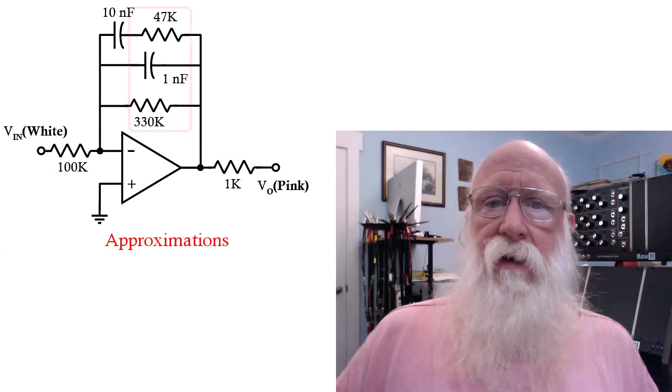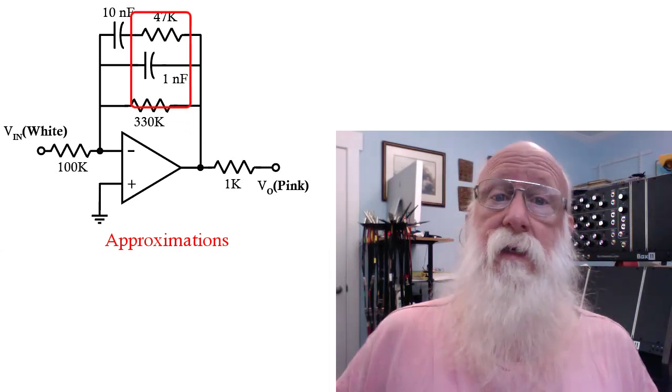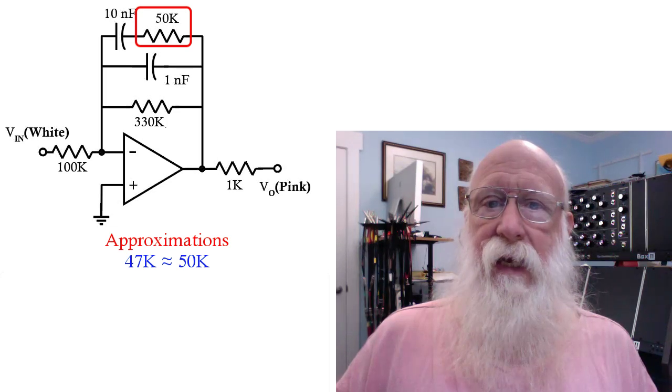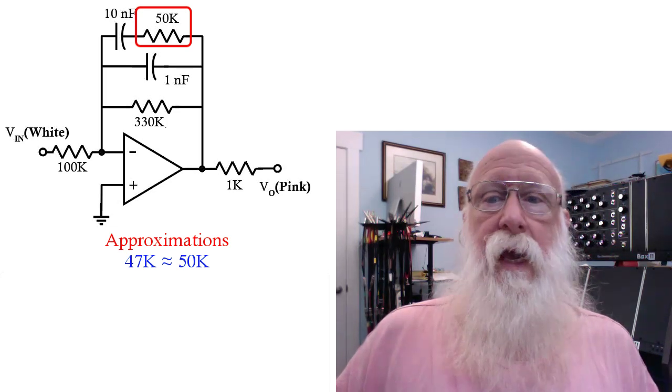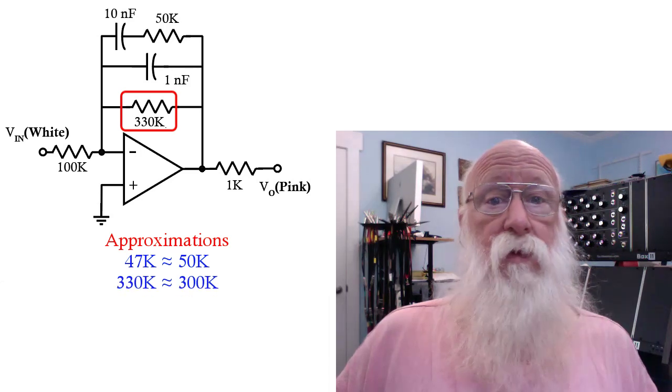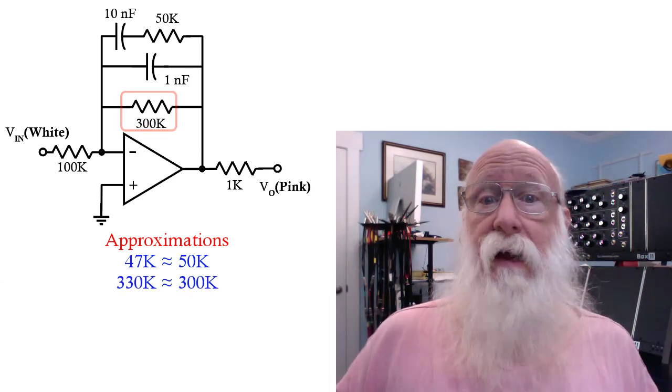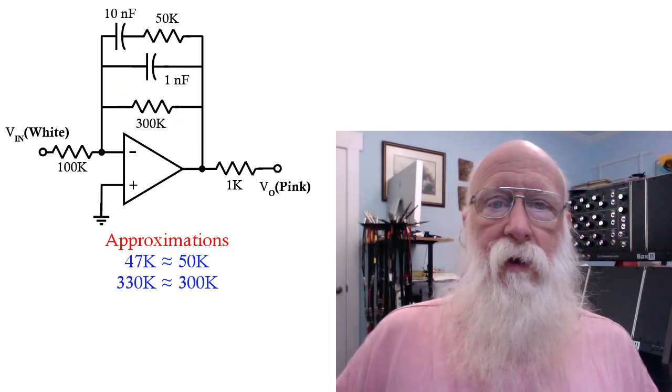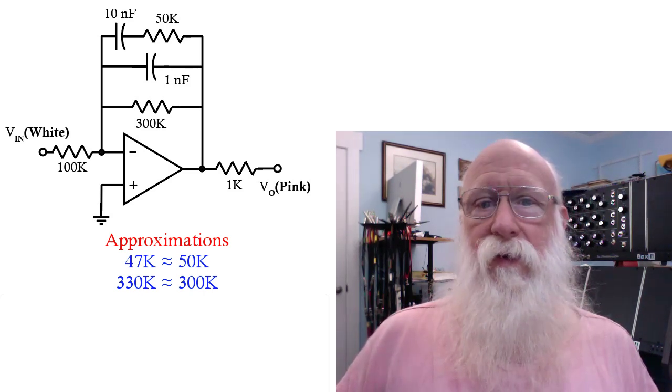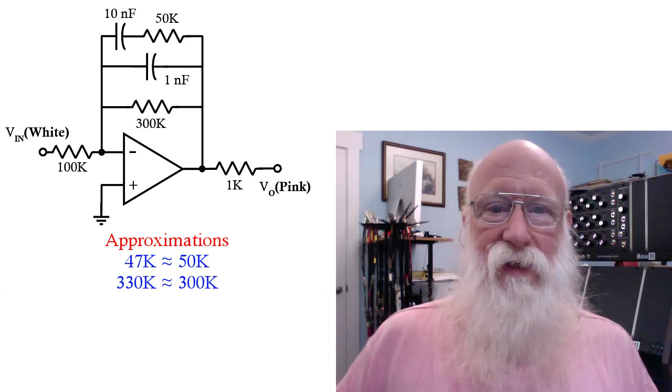First of all, I'm going to change those two resistor values. Instead of 47K, I'm going to make that 50K, a lot easier to work with. And instead of 330K, I'm going to make that 300K. Now if you actually built this filter, you almost certainly would not be able to hear the difference with those changes in the resistance values.